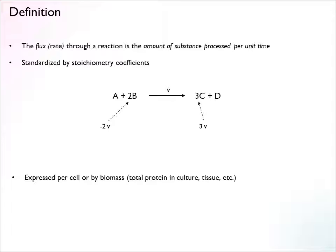We also standardize by stoichiometry coefficients. If you have a reaction with different stoichiometry coefficients for different components, we must take that into account. What we mean by the flux, often denoted V, is the rate of production of a metabolite that has stoichiometry coefficient 1. So a metabolite reproduced at 3 times the rate, or a substrate consumed at 2 times the rate, must be accounted for. We standardize these things so that flux is always well defined.